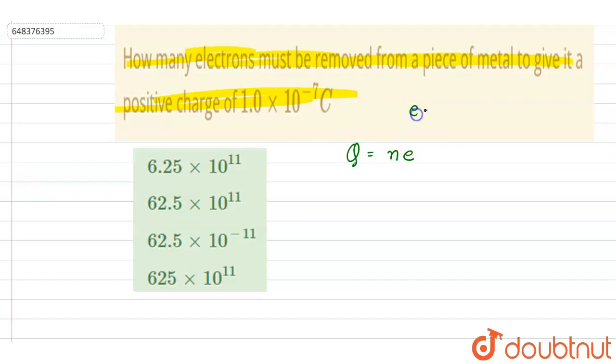So what we'll write down: the charge that we require is this, and the number of electrons into it will be this, and we want the number, right?